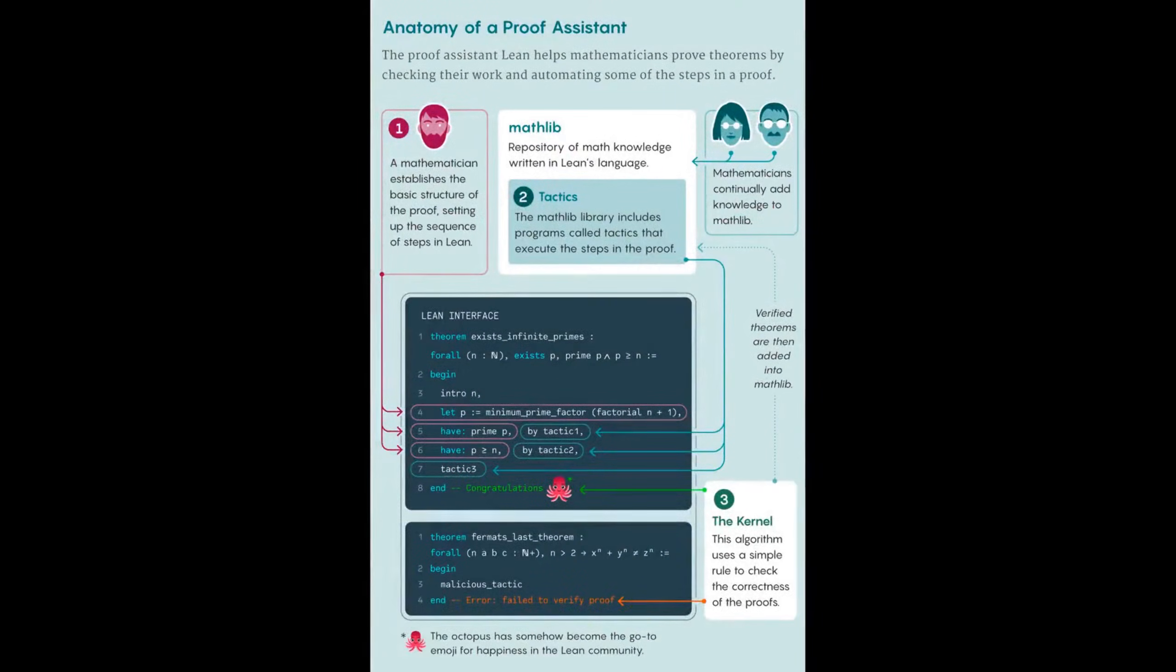As I said at the beginning of this video, most proof assistants use type theory. One proof assistant that I really like is Lean. So as a conclusion, I want to show you how to prove that 2 plus 2 equals 4 in Lean. Thanks for watching this video.